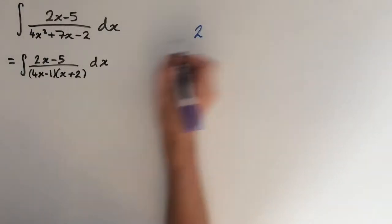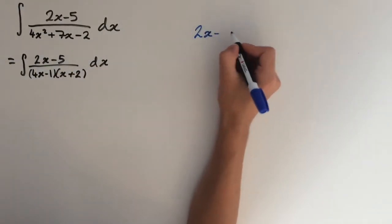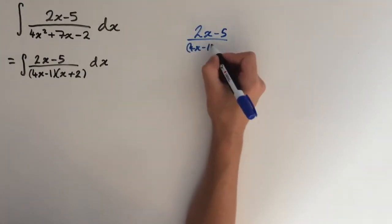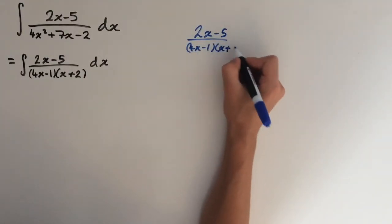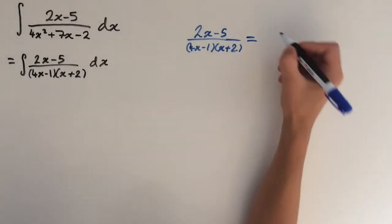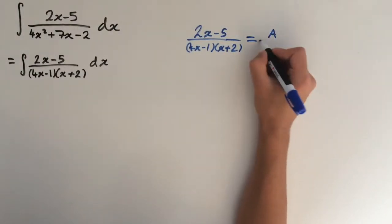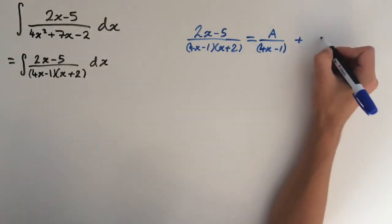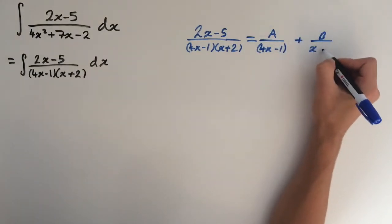So we want to express 2x-5 over 4x-1 times x plus 2 as two separate fractions. So these will be A over 4x-1 plus B over x plus 2.